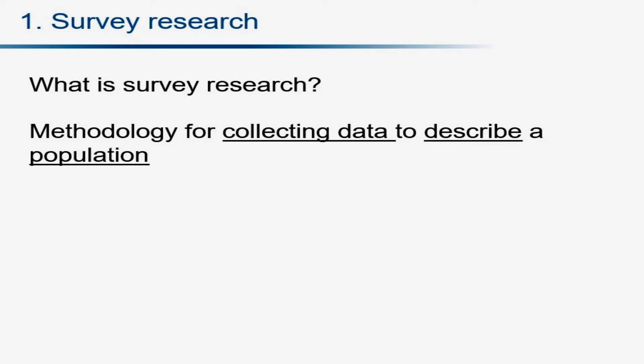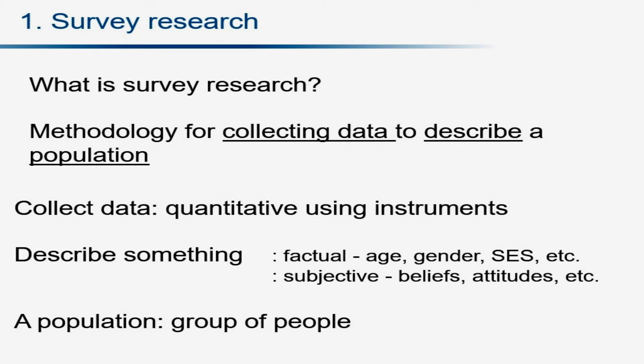There are a few key elements here. The first part is collect data. It's mostly quantitative using instruments, but the data can also be qualitative. The point is you're collecting data that you're going to analyze, either quantitatively or qualitatively. And then you're supposed to describe something. It can be factual — for example, age, gender. It can also be subjective — beliefs, attitudes, perceptions and so on.